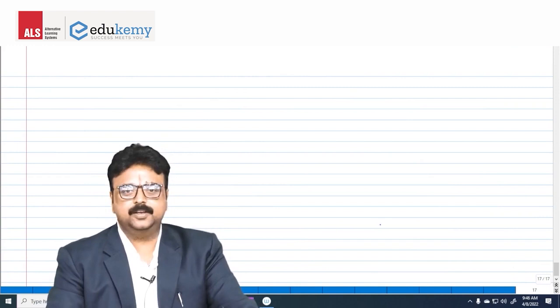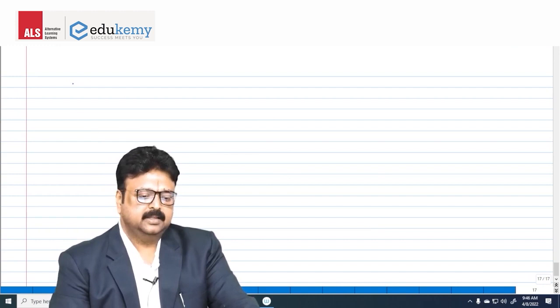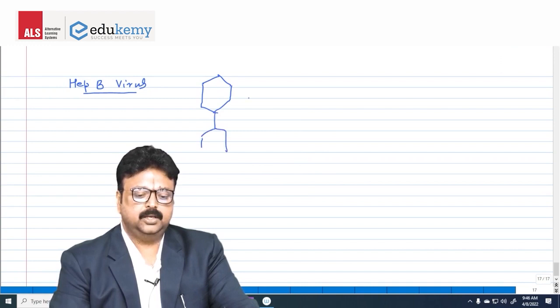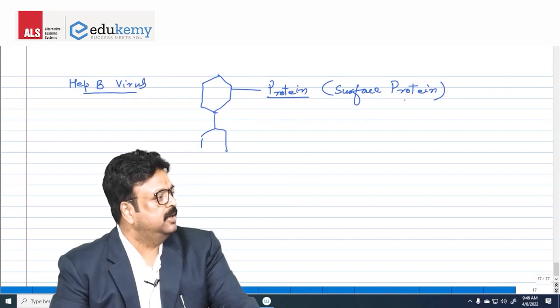It will be discussed in biotechnology I hope, but let me explain. Suppose that this is hepatitis B virus. If you ask it, it will tell you that all around me is protein structure. I am a body builder and my body is made up of protein. This is protein and this protein is called as surface protein.